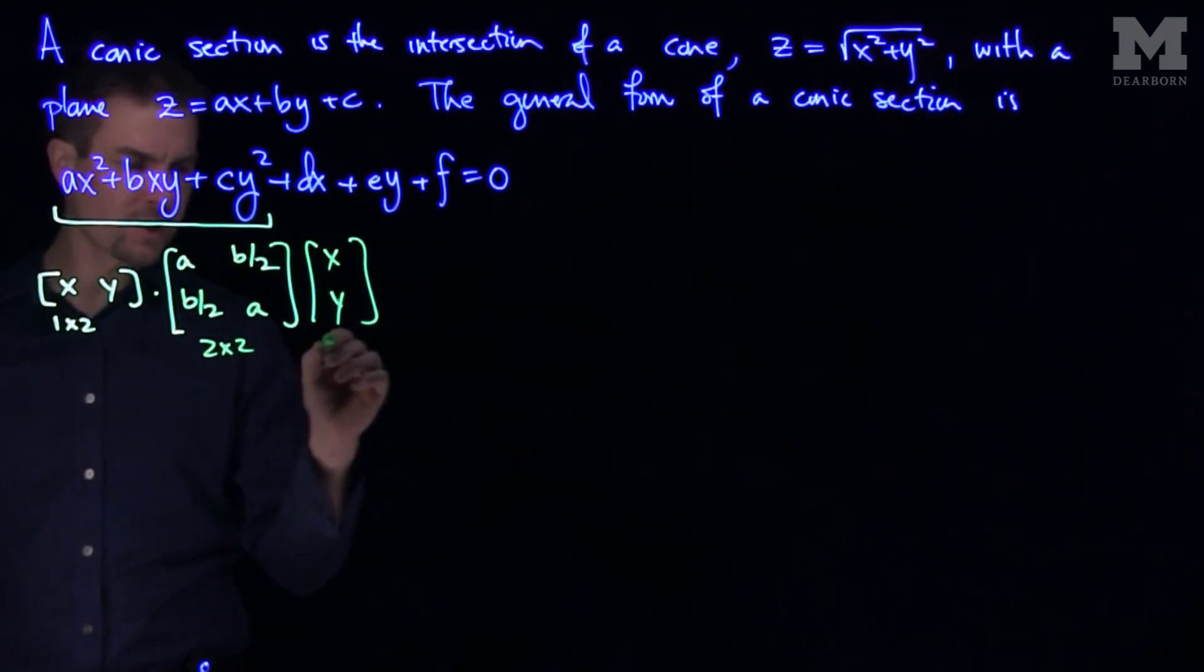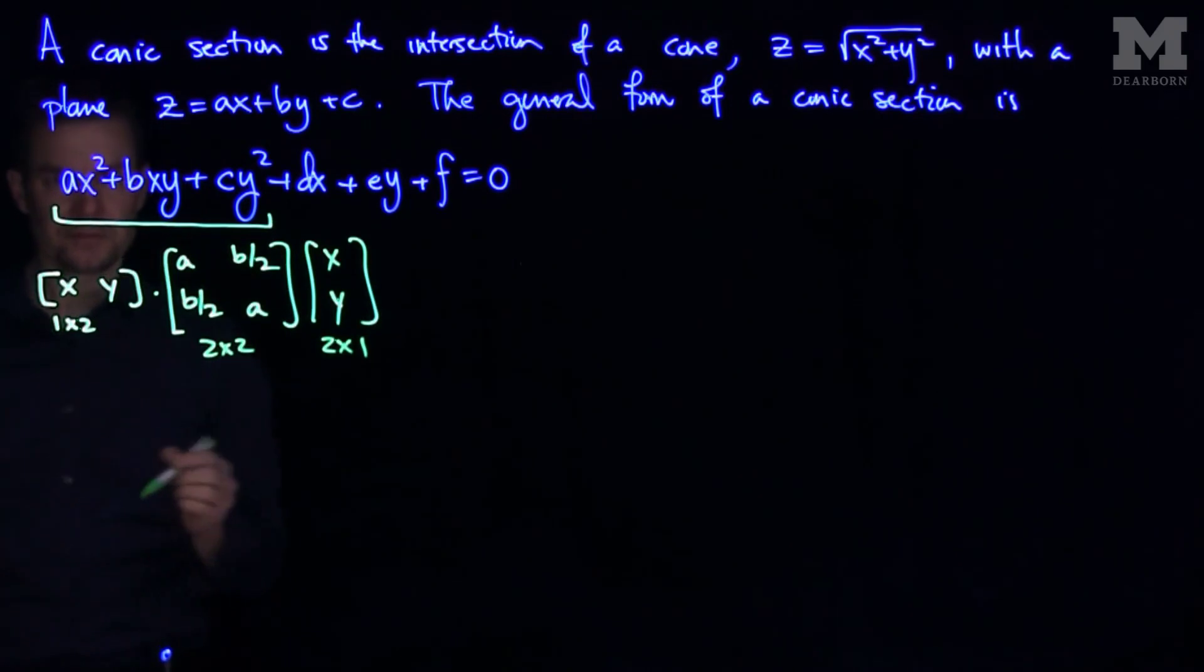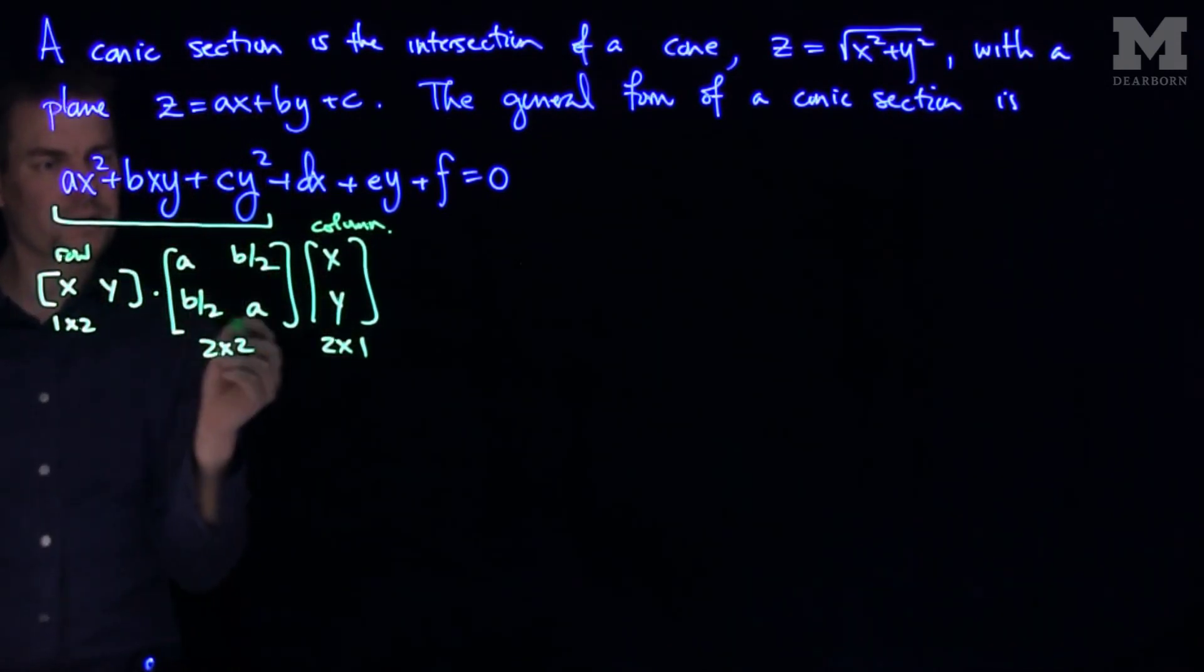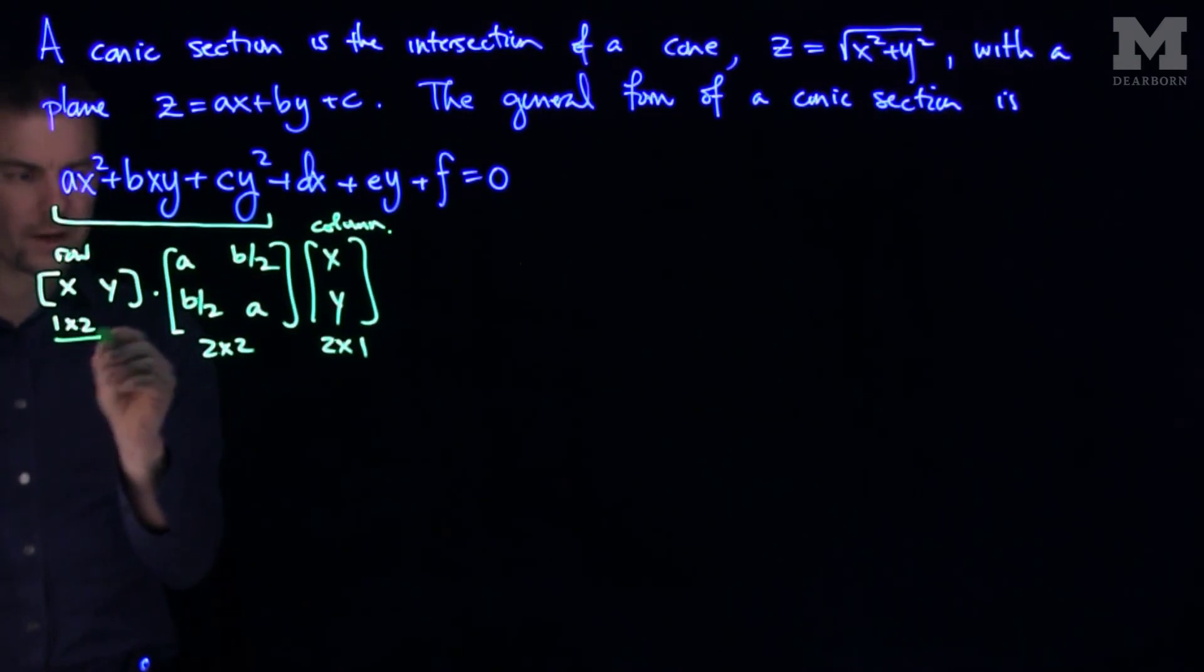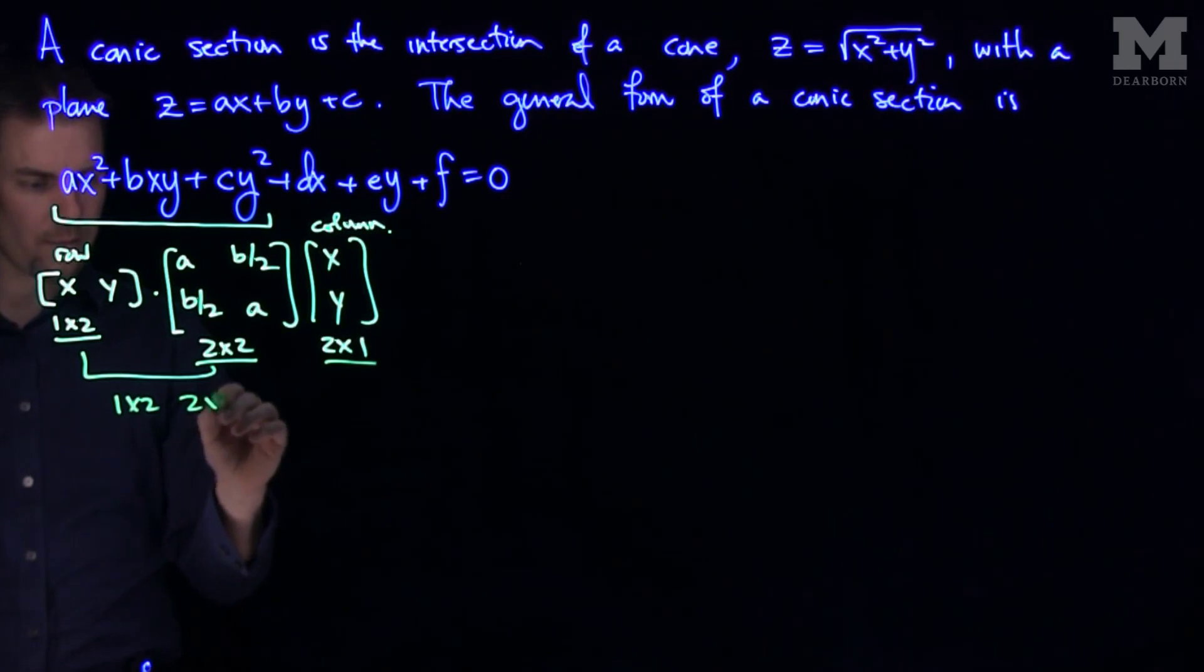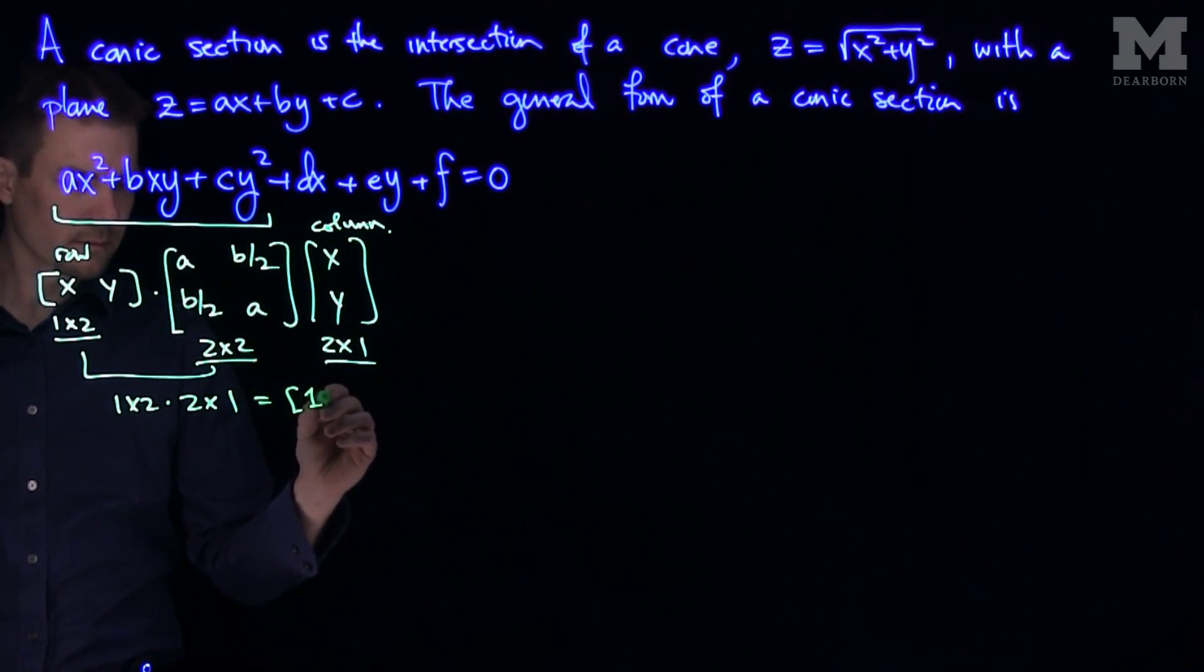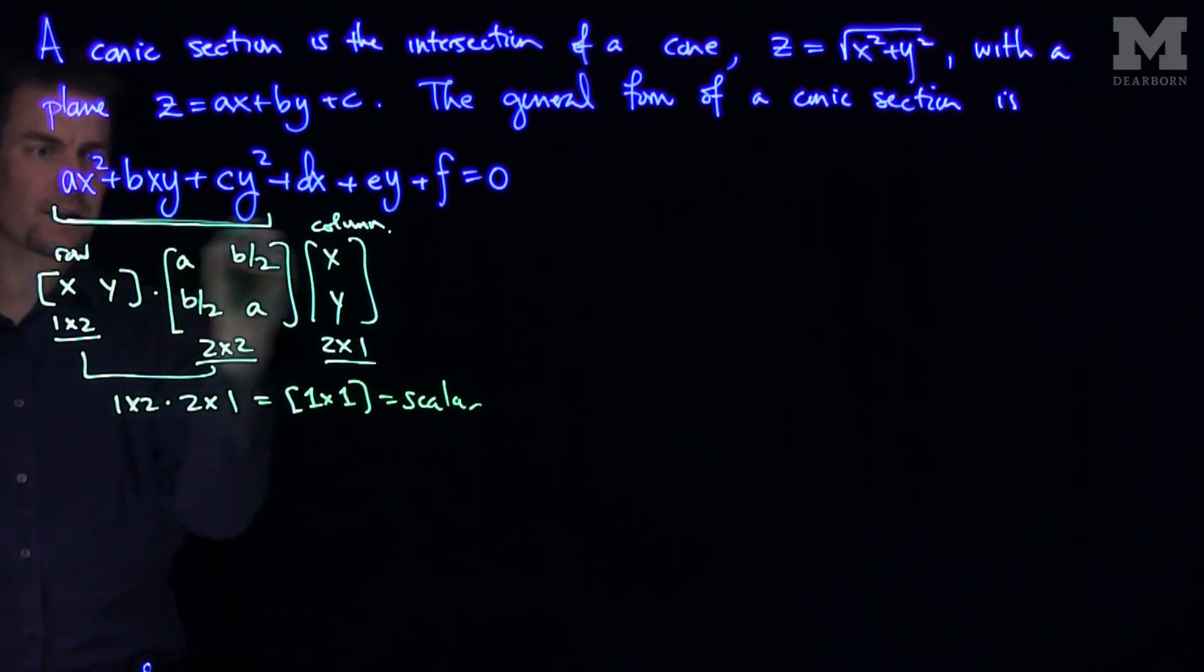This is a two by two matrix and a two by one vector. So I have a row vector over here. I have the same column, the corresponding column vector over here. And so if we multiply this out, we'll get exactly this expression. And so remember we have a one by two, two by two, that results in a one by two. And then a two by one, and a one by two and a two by one results in a one by one, which is just a scalar. And that scalar is exactly equal to this.